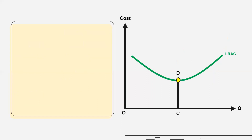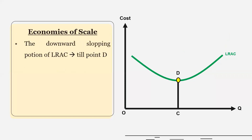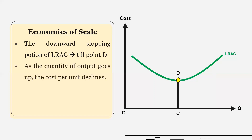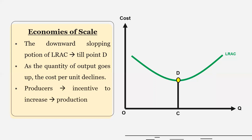Now let's understand the idea of economies of scale and diseconomies of scale. The downward sloping portion of the long-run average cost curve represents economies of scale. So if we increase the output, the long-run average cost declines. Therefore, producers have the incentive to increase production because that will increase profit. That is economies of scale.